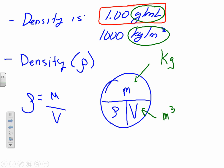So remember, if something is less than 1, it will float. If something is greater than 1, it will sink. So, let's do an example here.